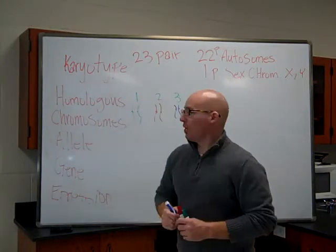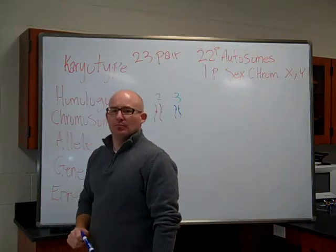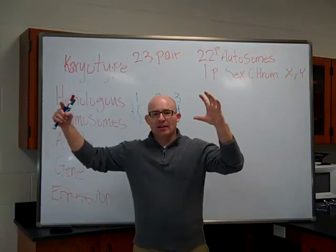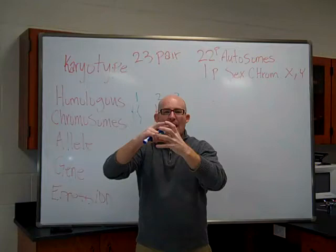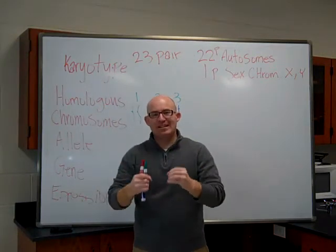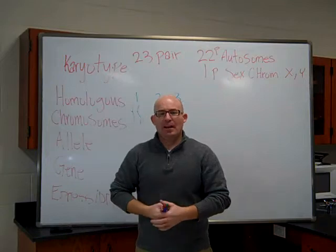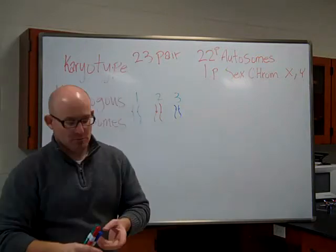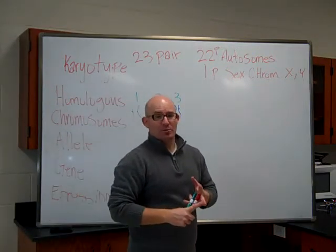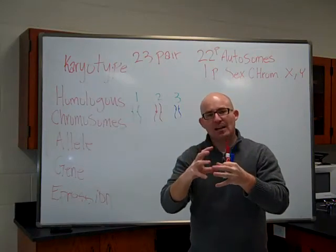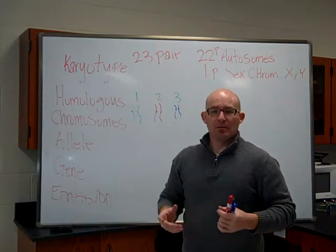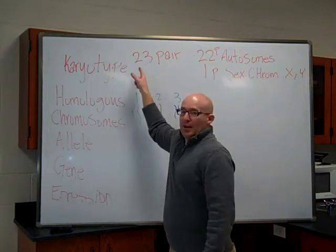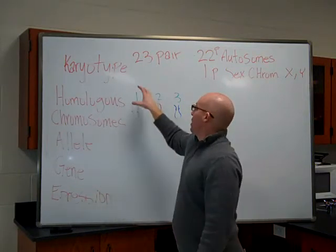Why do I have pairs of chromosomes? We have pairs because mom's egg and dad's sperm came along and fertilized, and each one of those sex cells carried a complete set of chromosomes — 23 chromosomes each. Mom's sex cell carried 23, dad's sex cell carried 23, and when those two combined and fertilized, it made a little organism with 46. So mom brought chromosomes one through 23, and dad's sex cell brought chromosomes one through 23.